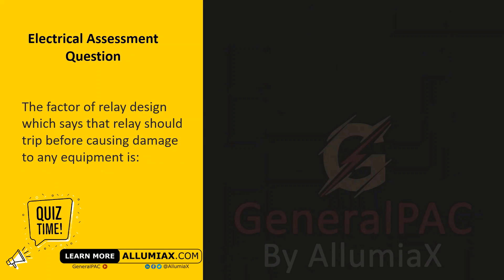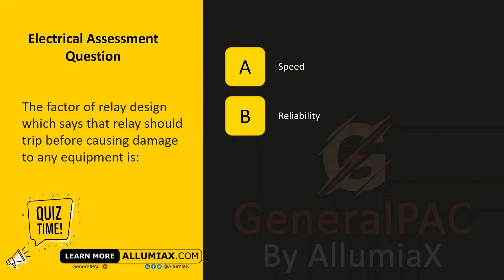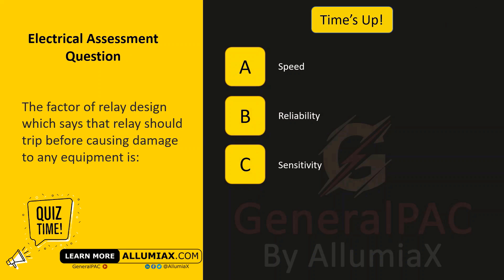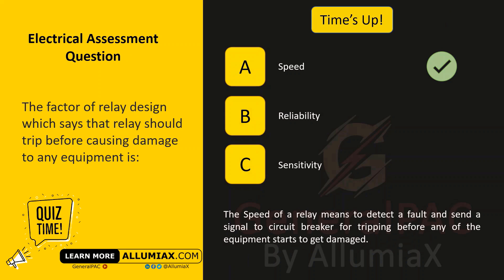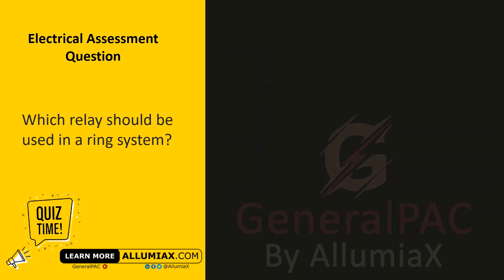The factor of relay design which says that the relay should trip before causing damage to any equipment is: A: speed, B: reliability, C: sensitivity. The answer is A — speed. The speed of a relay means to detect a fault and send a signal to the circuit breaker for tripping before any of the equipment starts to get damaged.